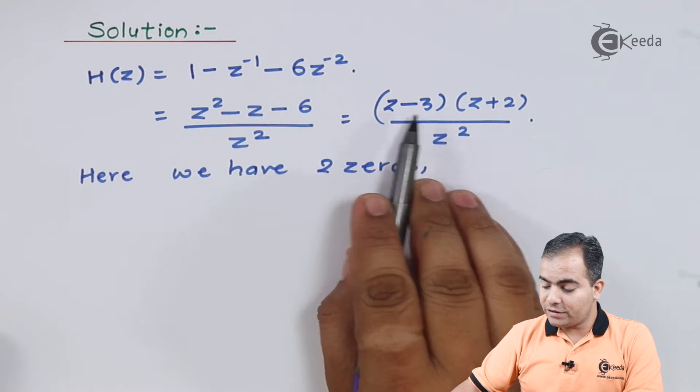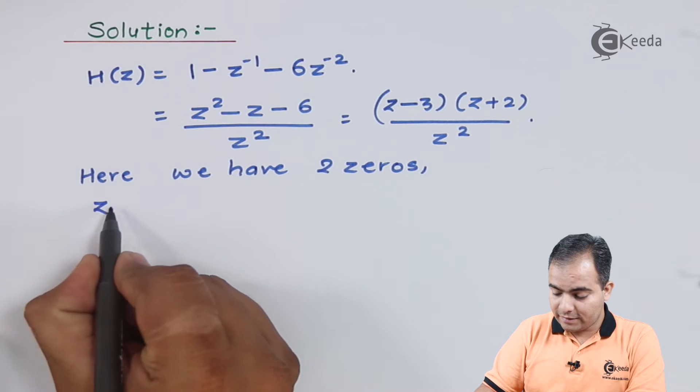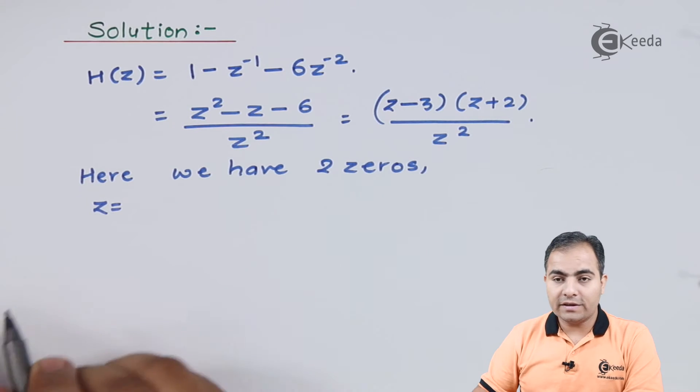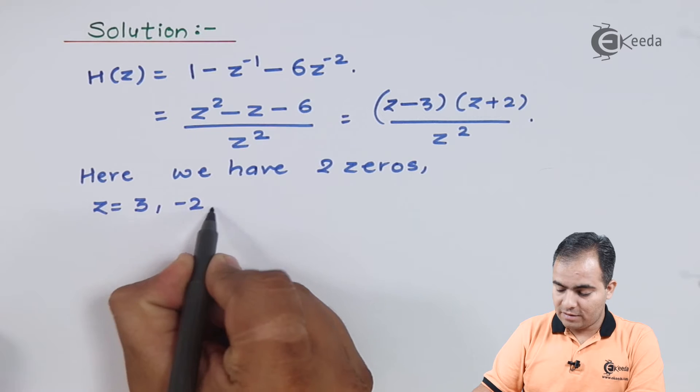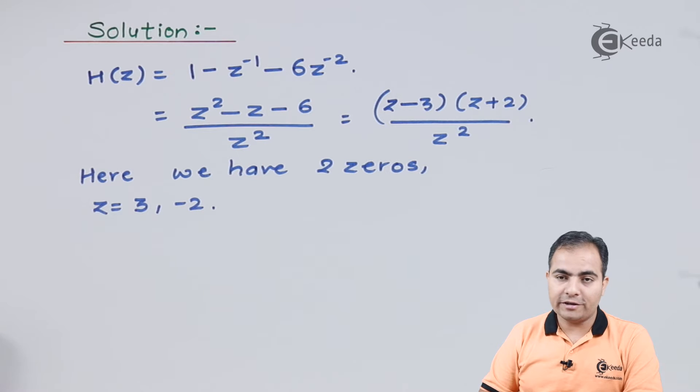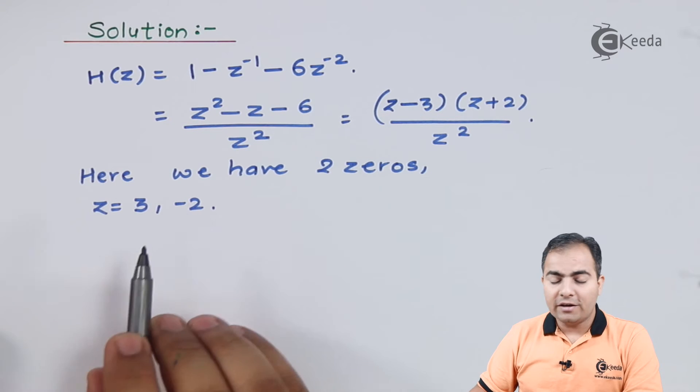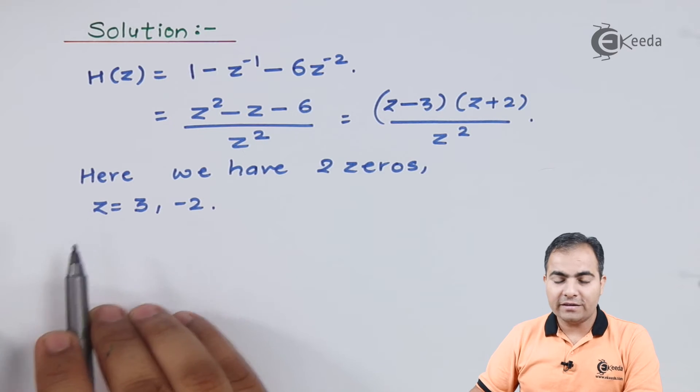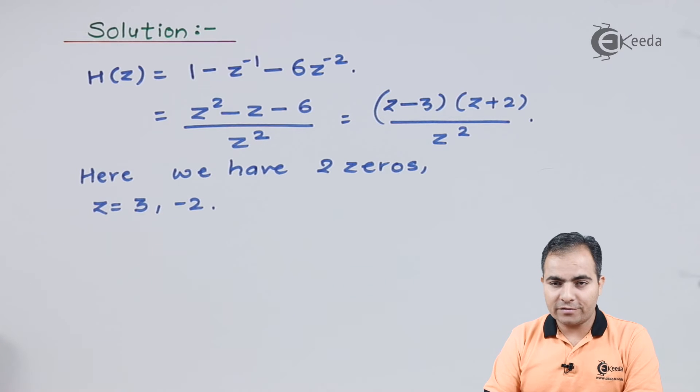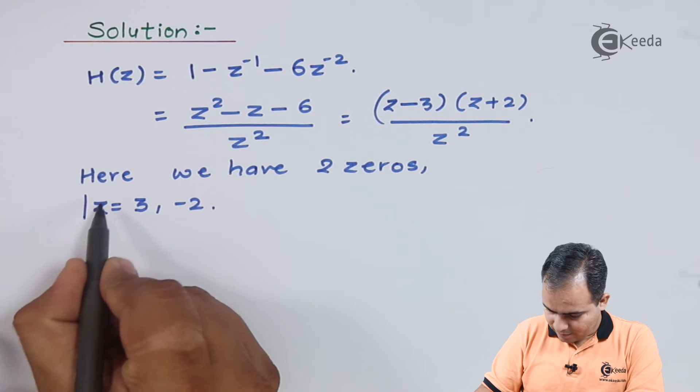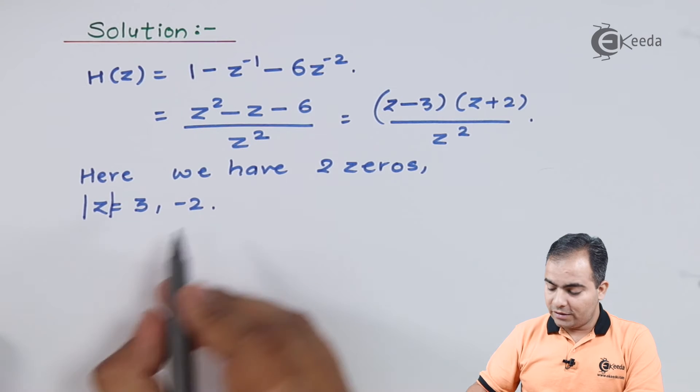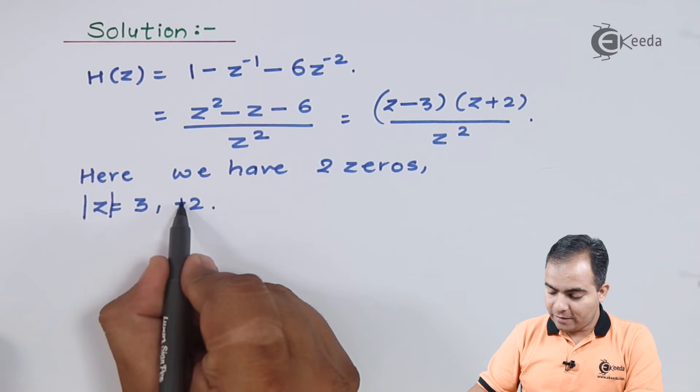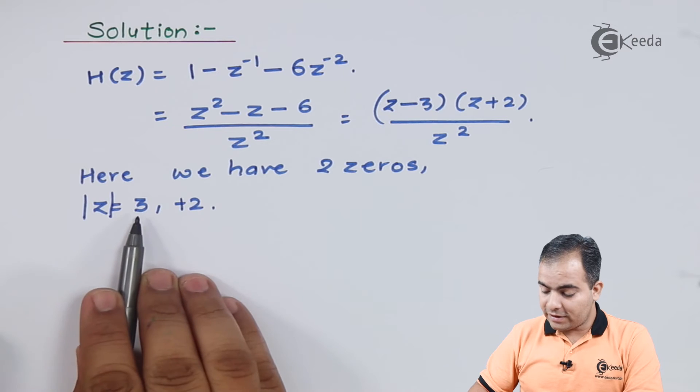If I compare each factor with respect to zero, the first one is 3 and the next one is minus 2. These are the radius circles. This 3 means we have a circle with radius 3. For minus 2, we never take a minus 2 radius. In z-transform calculations we always use mod z, so this will be replaced by plus 2.